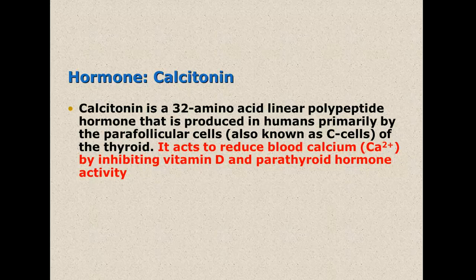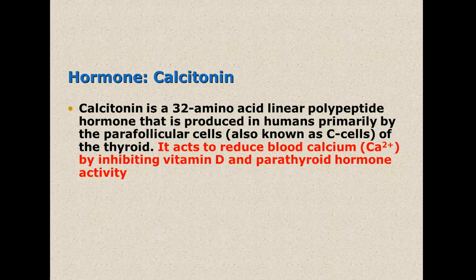Another hormone is calcitonin. Calcitonin is a hormone produced in humans by the parafollicular cells of the thyroid. It acts to reduce blood calcium by inhibiting vitamin D and parathyroid hormone activity.